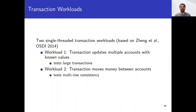We carefully crafted transaction workloads to stress the database engine under test. We start with two single-threaded workloads from Zeng and Dal. The first updates multiple accounts with known values, testing large transactions that touch multiple rows and more than one block. The second moves money between accounts, exercising multi-row consistency. At the end of each test cycle, we check that each transaction is all-or-nothing: transactions committed before the fault are present, those after are not, and consistency invariants continue to hold — for example, the total amount of money stays the same.